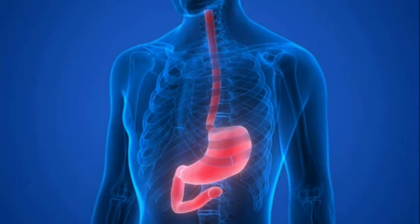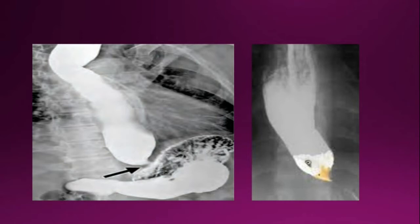In barium swallow X-ray there will be stricture with smooth tapering at the lower end of the esophagus, giving a pencil tip or bird's beak appearance. You can see this picture of the barium swallow X-ray — here there is bird's beak appearance, marked dilatation above it, and an air-fluid level due to lack of peristalsis.